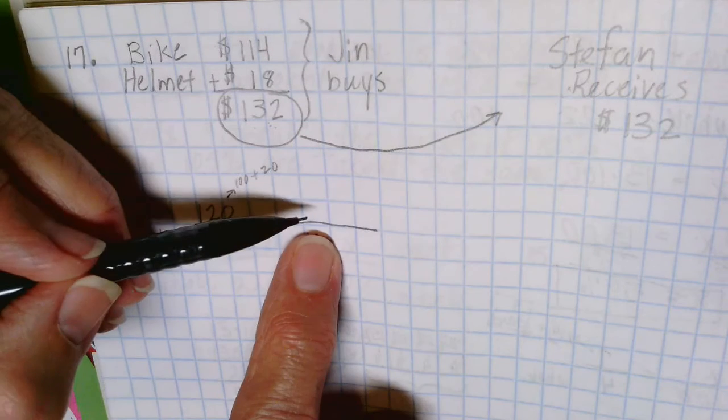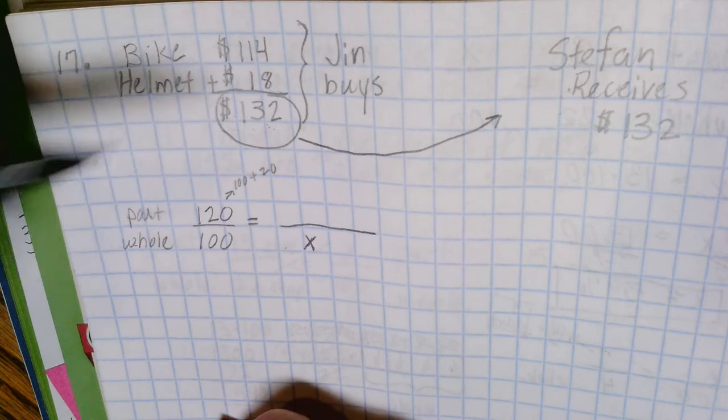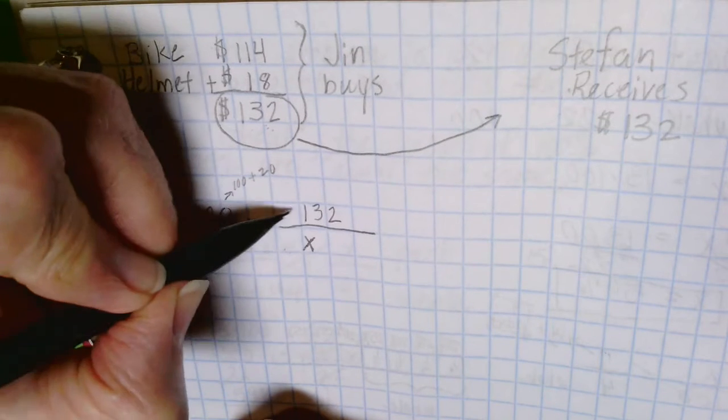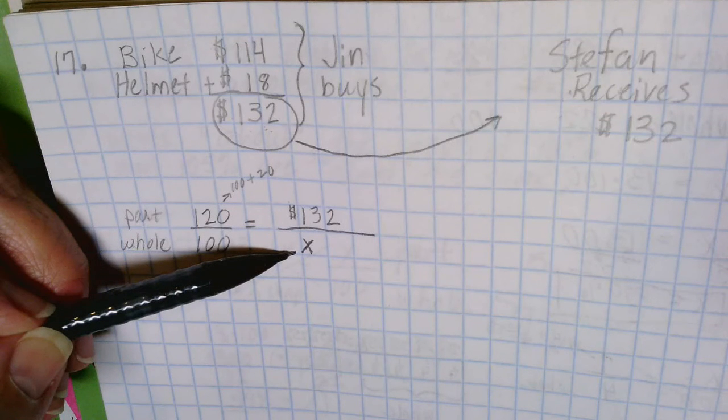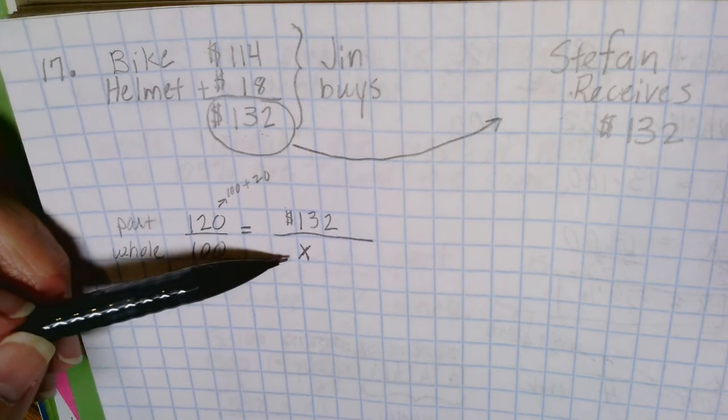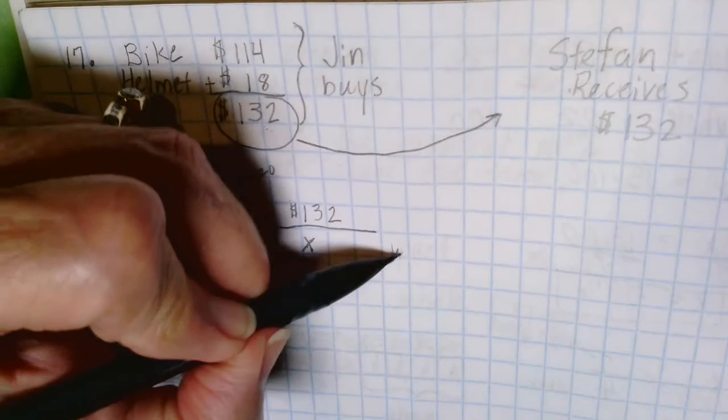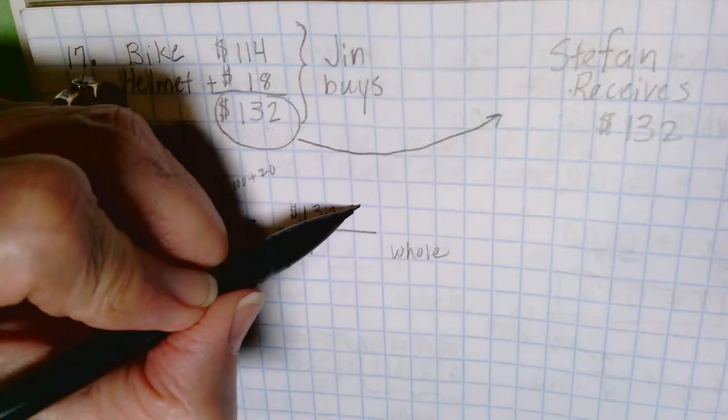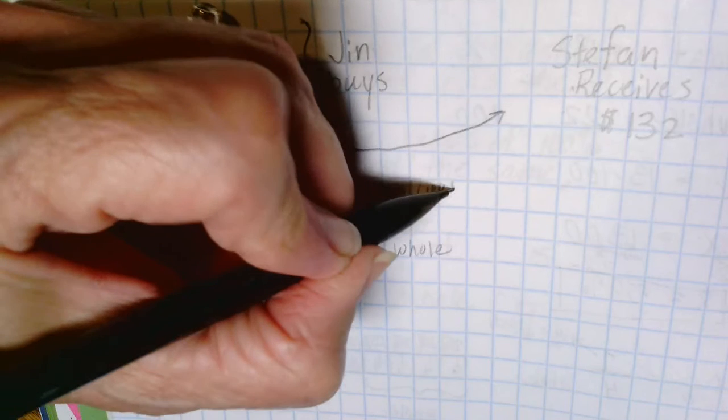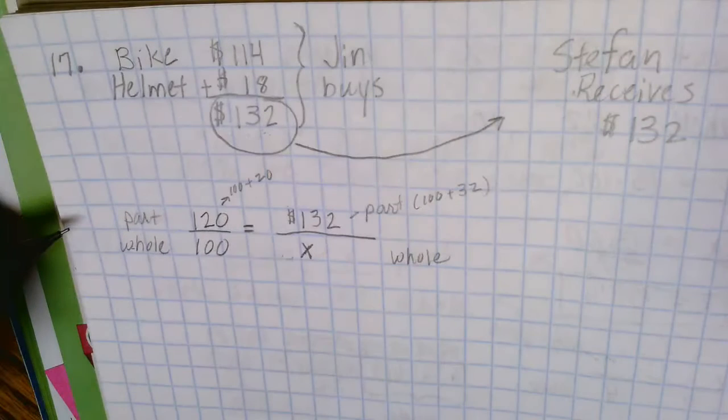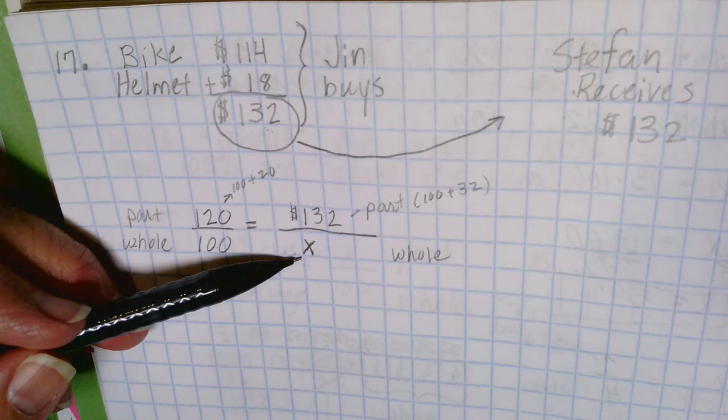But we do know what Jin had to pay—Jin had to pay $132. He paid more than what Stefan paid originally, so this 100% down here represents the total amount, the whole amount that Stefan paid. And then this up here is our part wherein we have 100 plus the 32. So what we're trying to find out is what was that amount that Stefan originally paid.